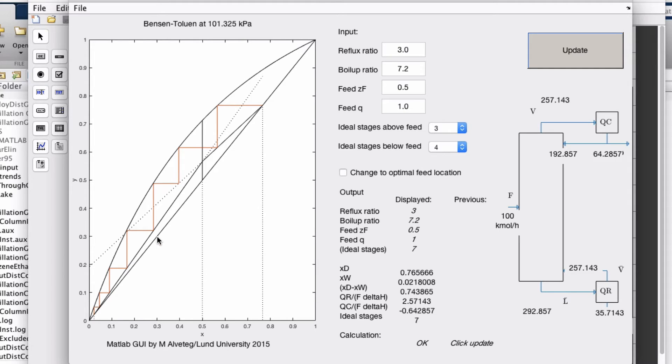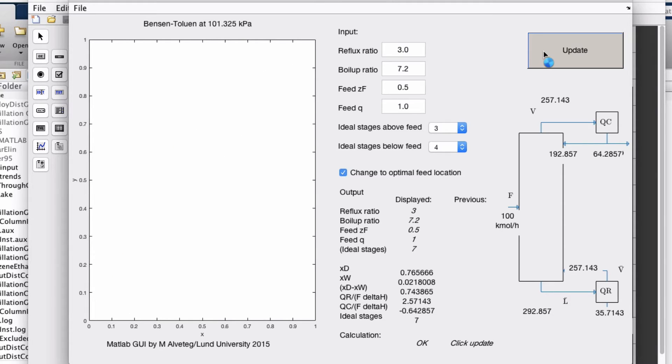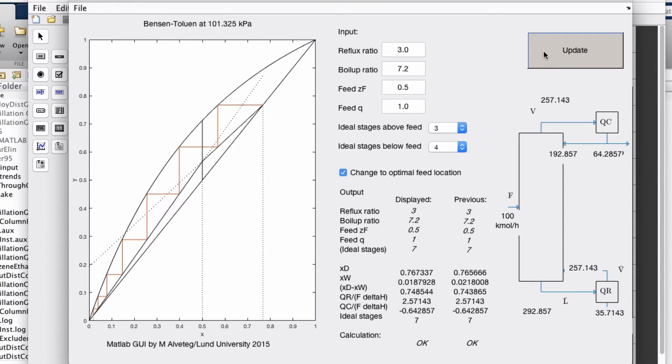So we have three ideal stages above the feed. So one, two, three, and then we shift to lower. So this is a sub-optimal feed location, right? We can change that to optimal feed location. And then we see that xd actually increased a bit and xw decreased a bit.